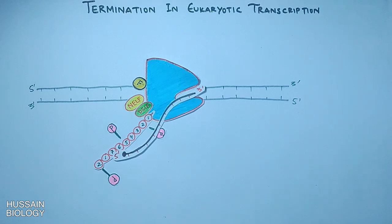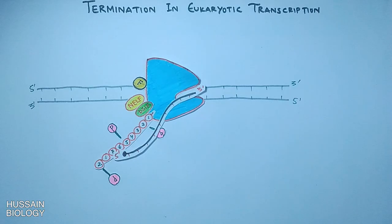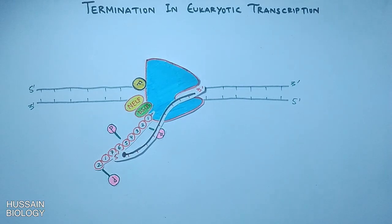Furthermore, to mediate the transcription process, the CTD is dephosphorylated at serine 5 position, and this is done by the serine 5 phosphatase as shown in the animation.